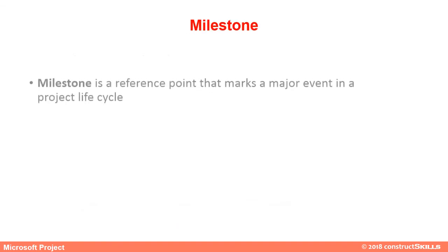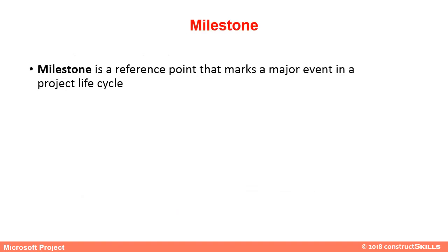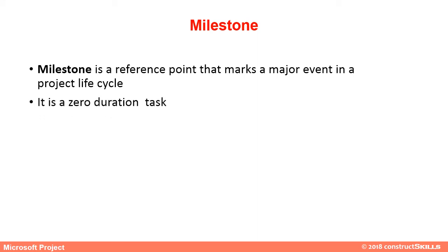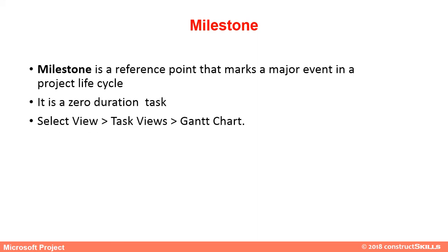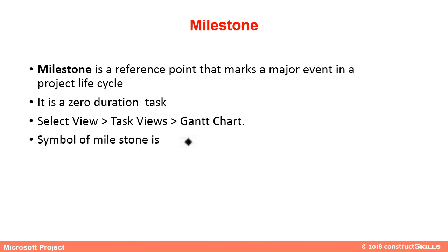A milestone is a reference point that marks a major event in a project life cycle. It is a zero-duration task. It can be added by going to View, then Task Views, and selecting Gantt Chart. The symbol of a milestone is a diamond shape.